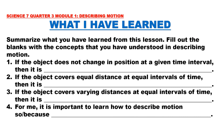What I Have Learned: Summarize what you have learned. Fill in the blanks with concepts you understood in describing motion. 1. If the object does not change in position at a given time interval, then it is ___. 2. If the object covers equal distance at equal intervals of time, then it is ___. 3. If the object covers varying distances at equal intervals of time, then it is ___. 4. For me, it is important to learn how to describe motion because ___.